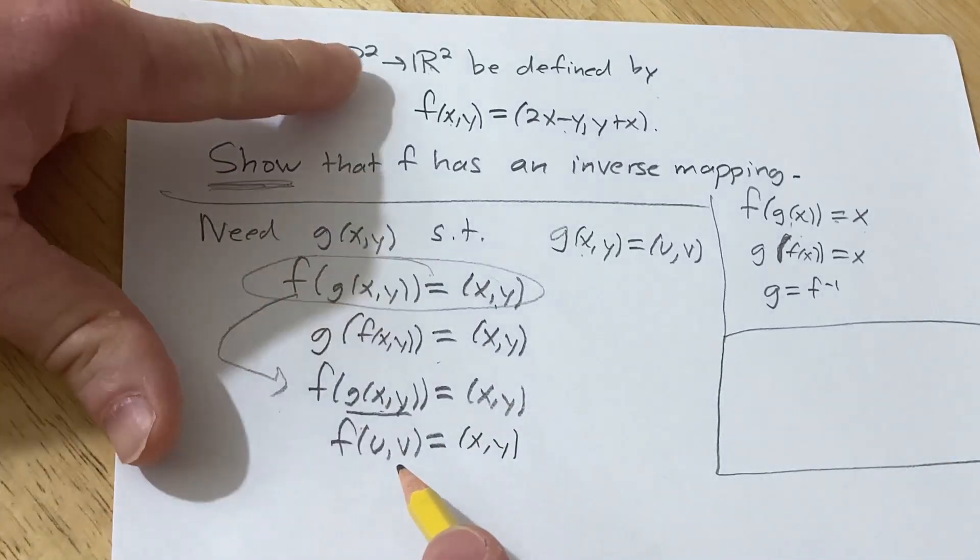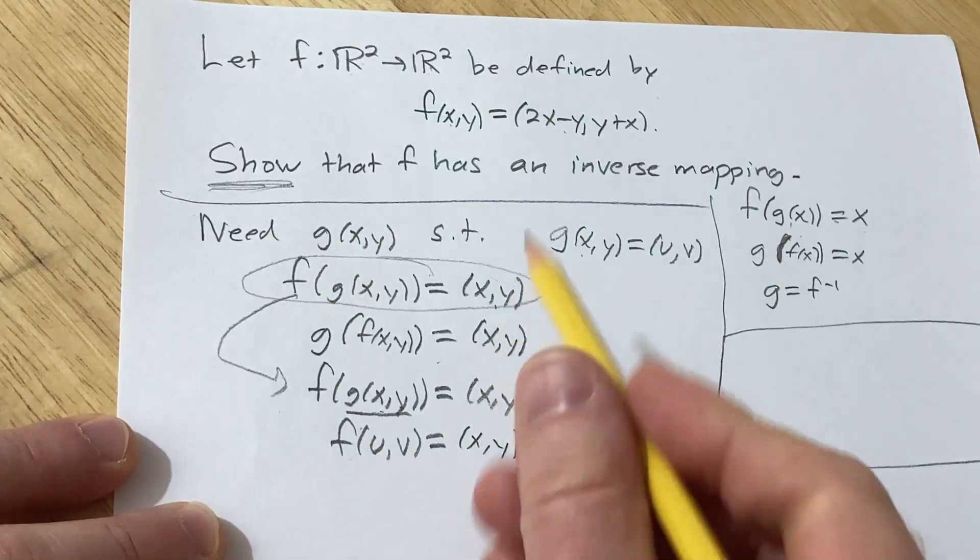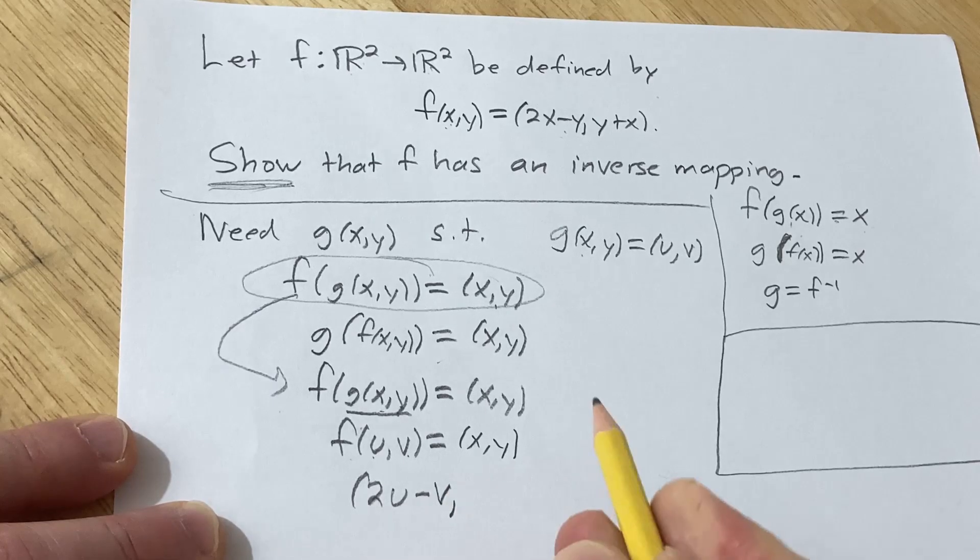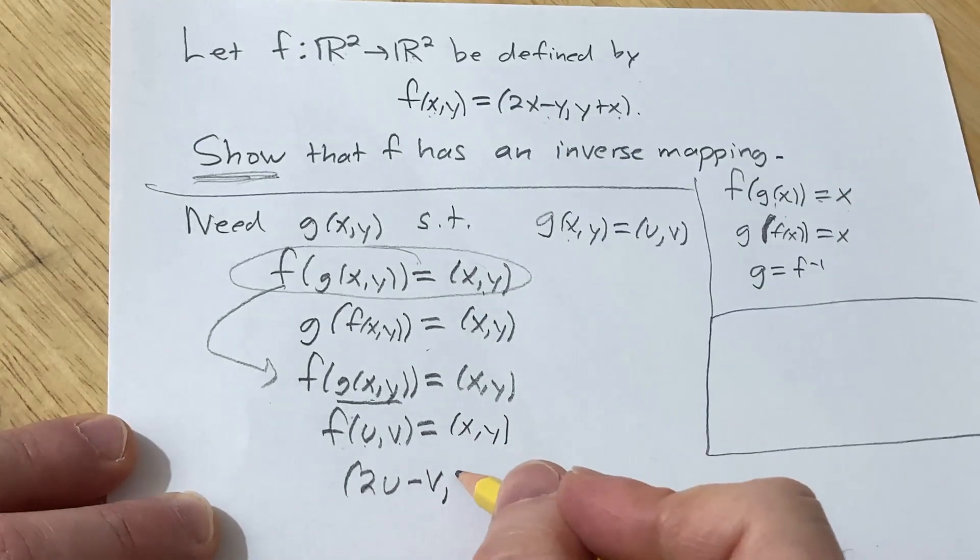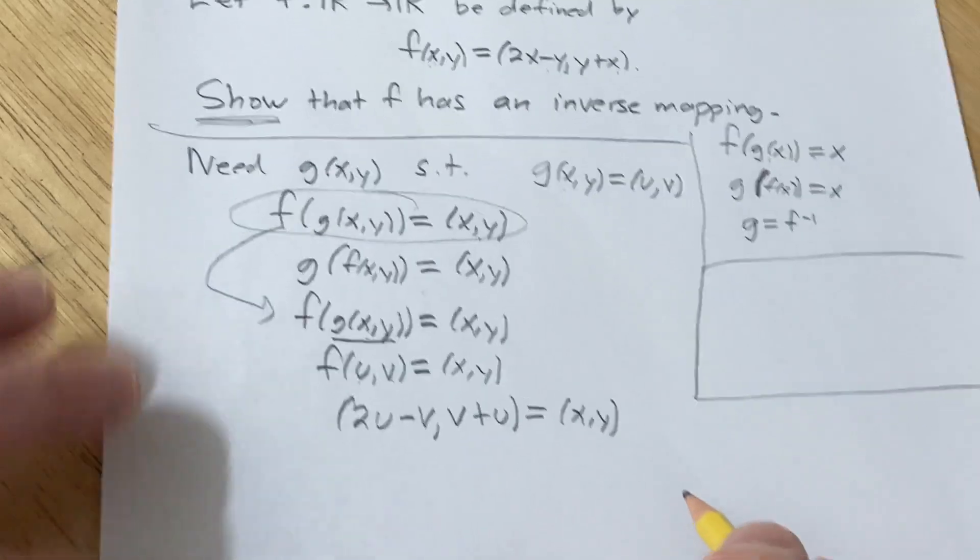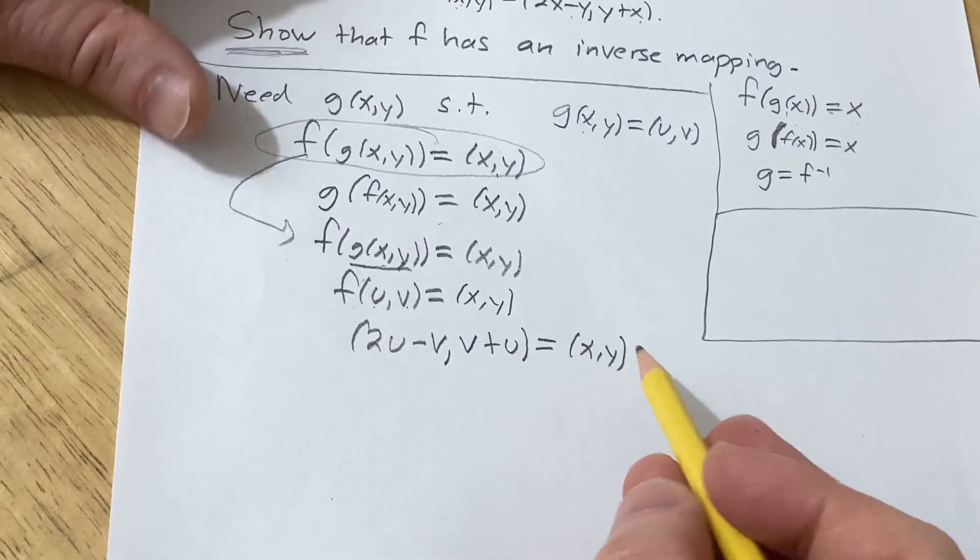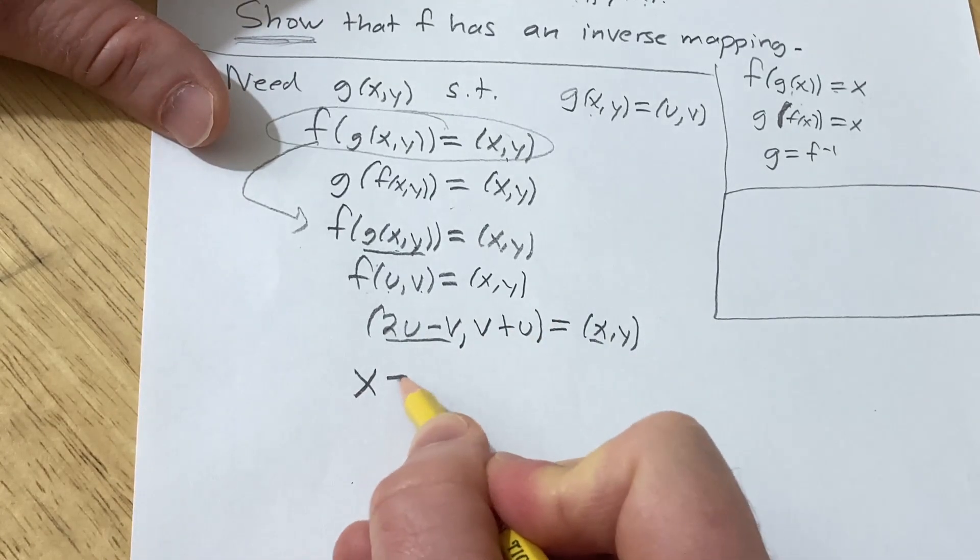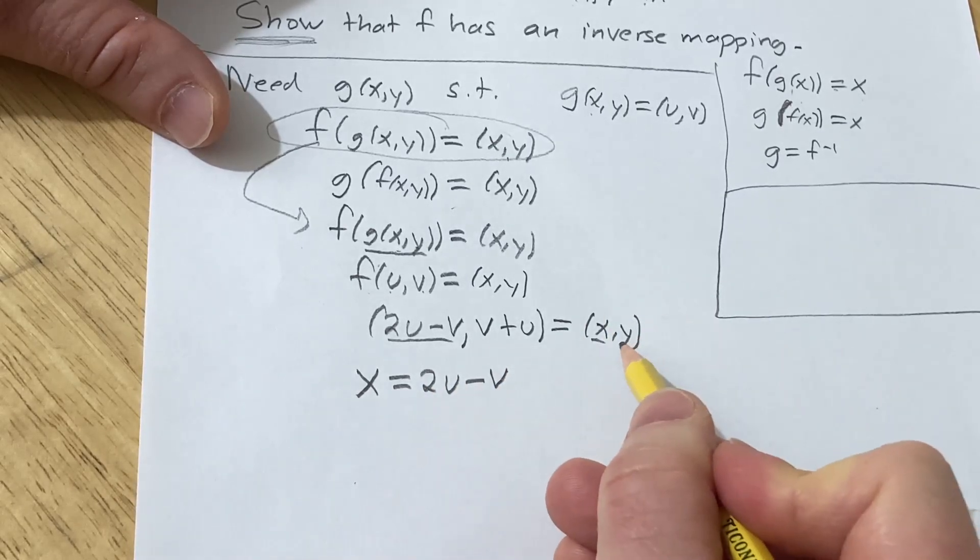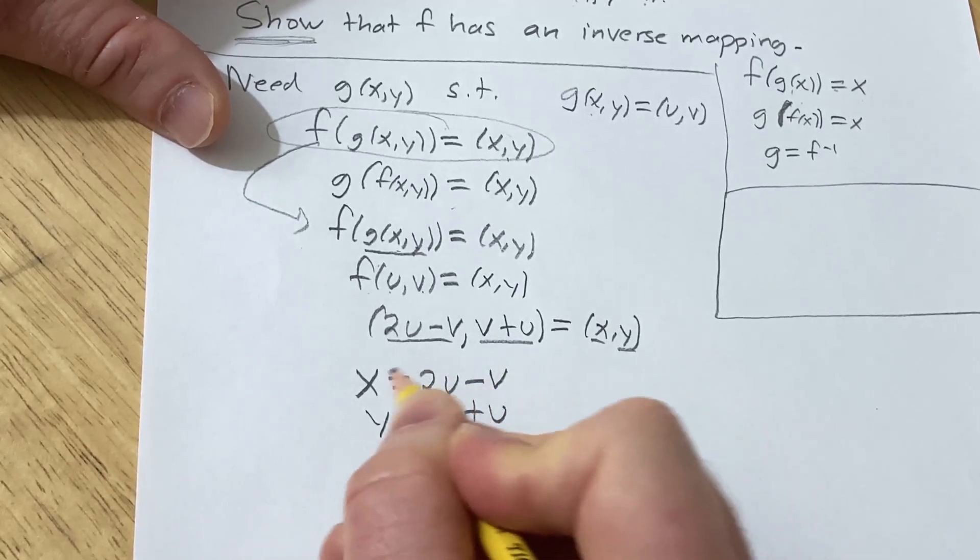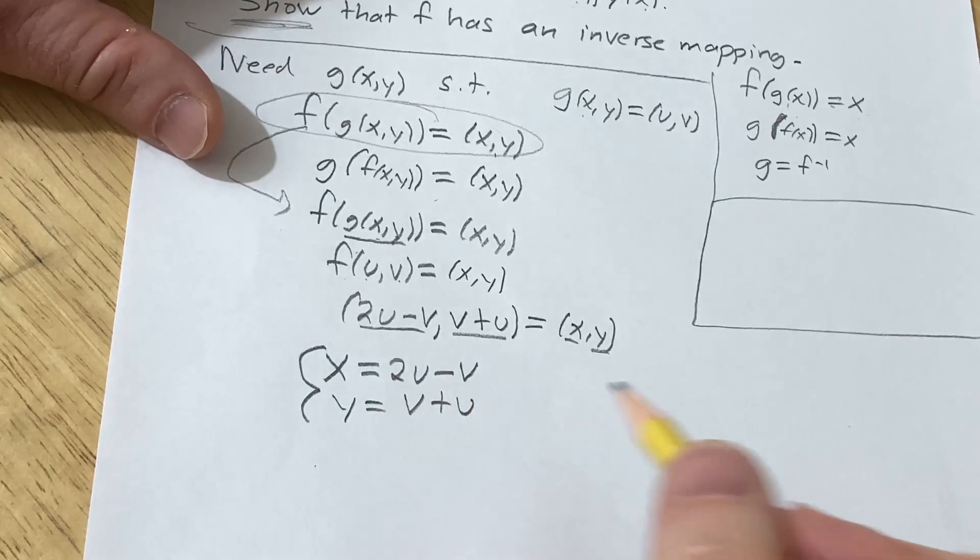But what's f? f is here, right? So now we can actually use the definition of f. So f of (x,y) is this. So this is our x, this is our y, except it's u and v. So we have (2u - v, v + u). And that should be equal to (x,y). Very nice. So now we have two ordered pairs and they're equal. So now that means that we set the components equal. So this is equal to x. So x is equal to 2u - v. And this is equal to this. So y is equal to v + u. So we have a system of equations, right? Which is pretty cool, which we can solve for u and v now.